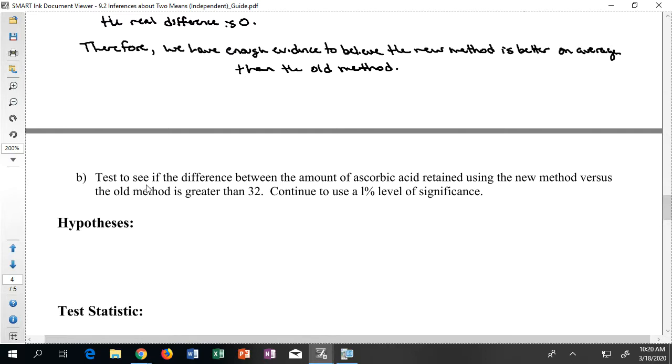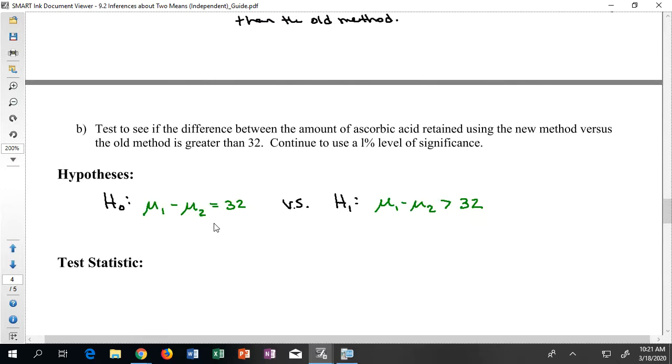So we're going to test to see if the difference between the amount of ascorbic acid retained using the new method versus the old method is greater than 32. Okay, so I'm going to go ahead and start to set up my hypotheses using the same symbols that I did in the last portion of this example. Although what I'll notice here is that I'm actually going to have to jump immediately to green hypotheses because here I'm testing to see if the difference between mean one and mean two is either equal to 32 or if that difference is greater than 32. It's actually not really possible to write down these hypotheses with only mean one and mean two. I have to have this number 32 in there. And since the problem describes this using a difference, I'll use the same thing.